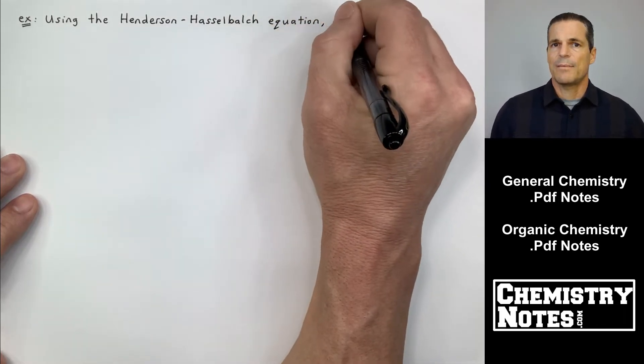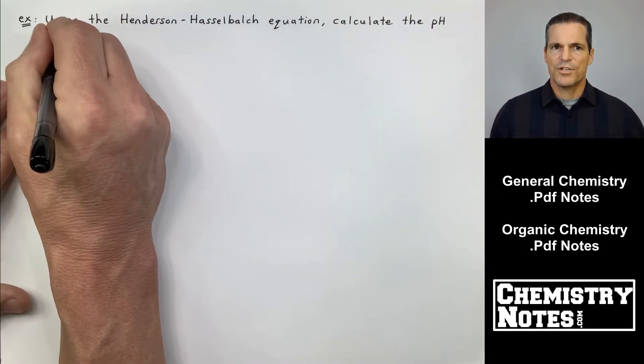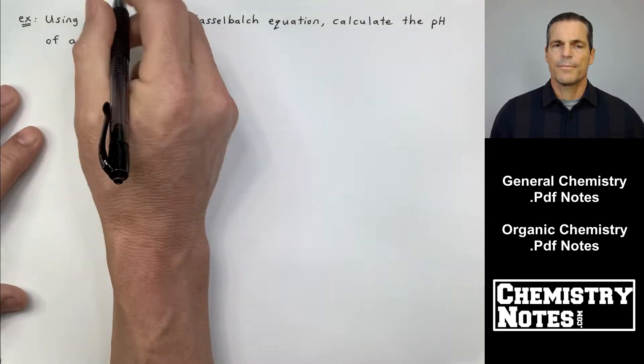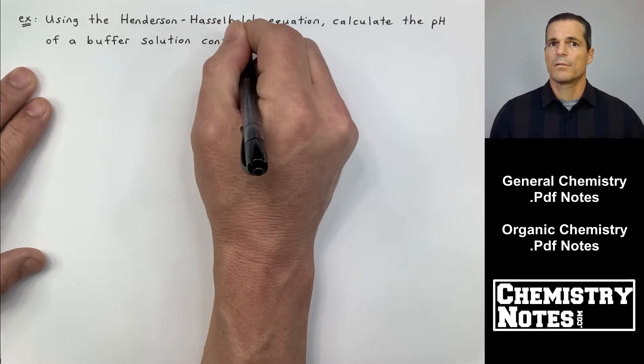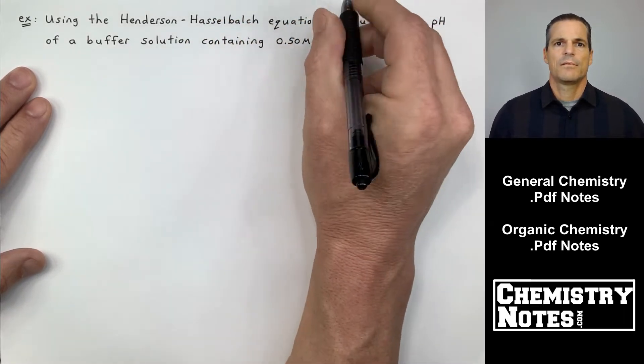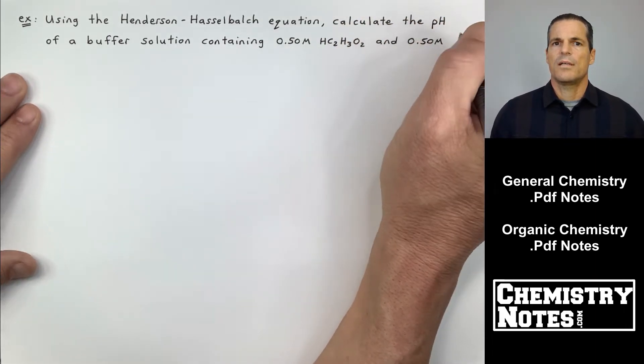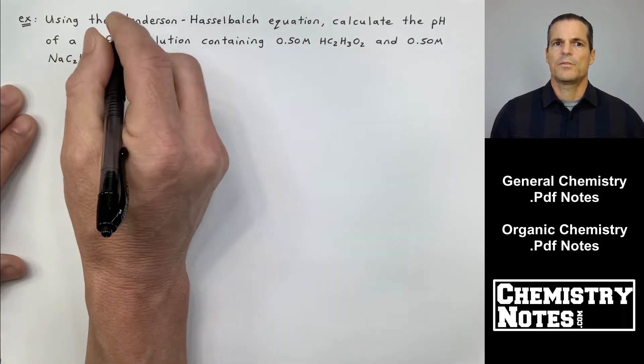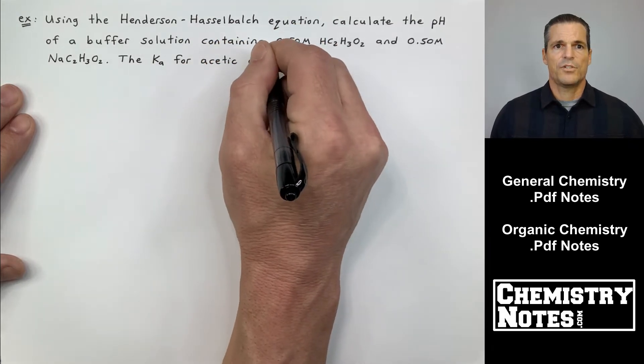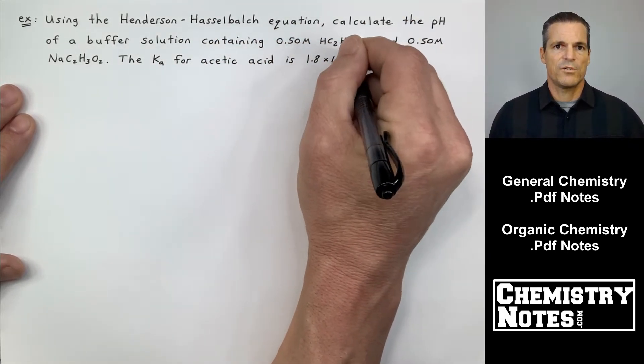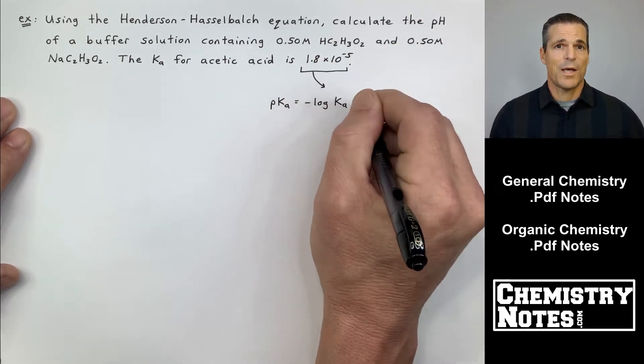So here's an example. Using the Henderson Hasselbalch equation, calculate the pH of a buffer solution containing 0.50 molar acetic acid and 0.50 molar sodium acetate, NaC2H3O2. Now if you have a good memory or you just recently watched the prior videos, you know that the pH of this solution is going to turn out to be 4.74 because we've done it once already.